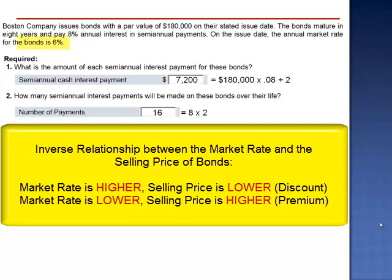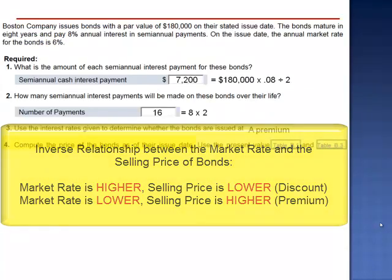In this case, the market rate is lower, 6%. When the market rate is lower, the selling price will be higher. We expect these bonds to sell at a premium.